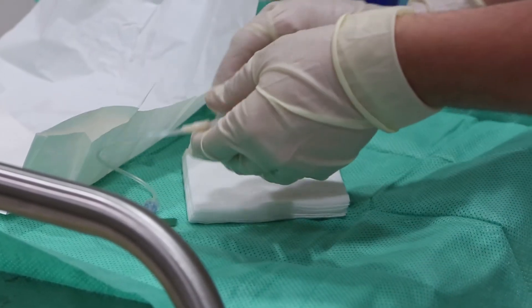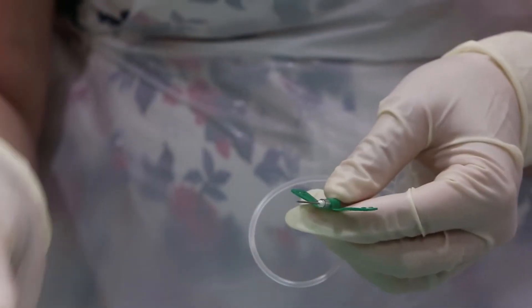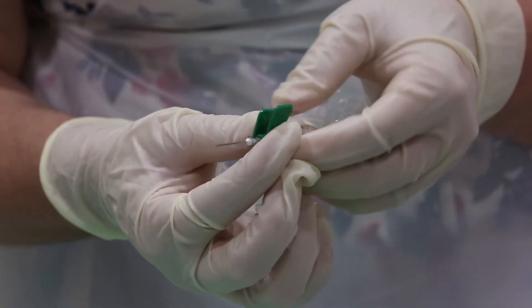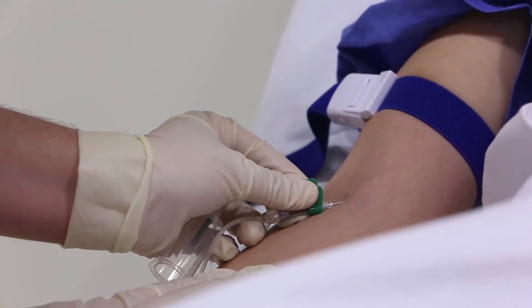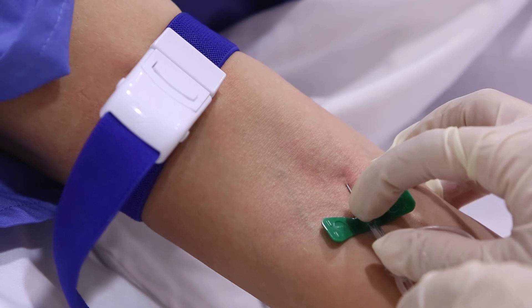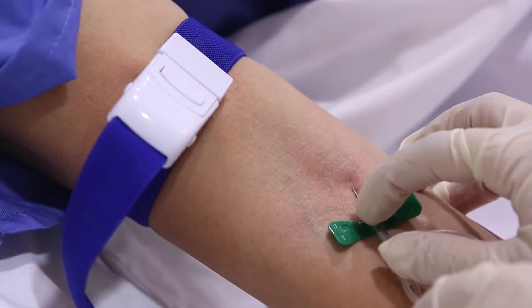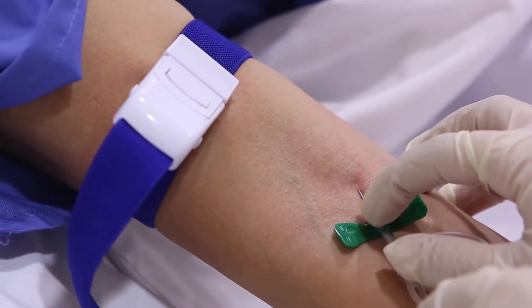Grab the safety blood collection set and remove the butterfly needle from its protective plastic cover. Perform venipuncture. Stabilize the butterfly needle onto the patient's skin, making sure to allow ease of access to the vacutainer holder.